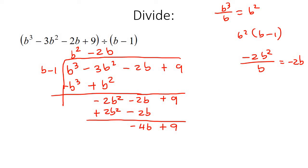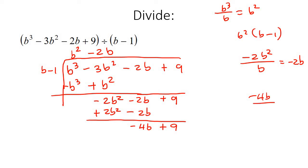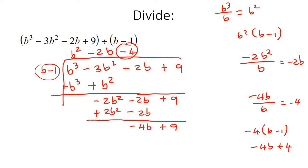We start the process again. The highest powers are b and negative 4b, and we divide them: negative 4b divided by b is negative 4. Then we take that negative 4 and multiply it with b minus 1, giving us negative 4b plus 4. We switch the signs — positive and negative — and add everything together: that gives 0, and 9 take away 4 is 5. That is our remainder.